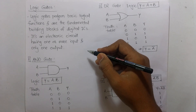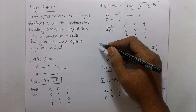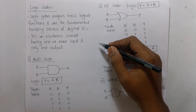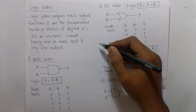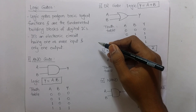In logic gates, our inputs can be 0 or 1. 0 means off position and 1 means on position. Off position means current is not flowing, and on position means current is flowing.